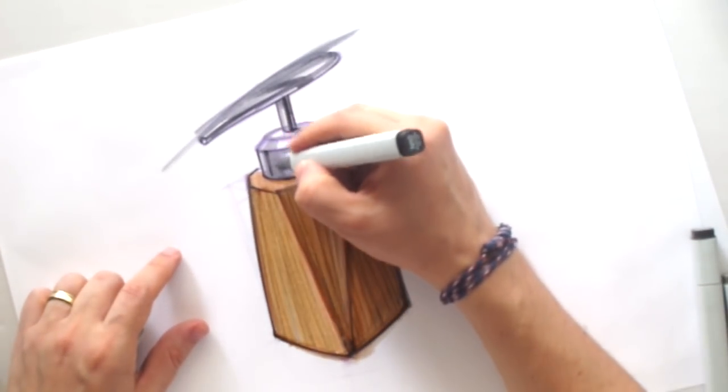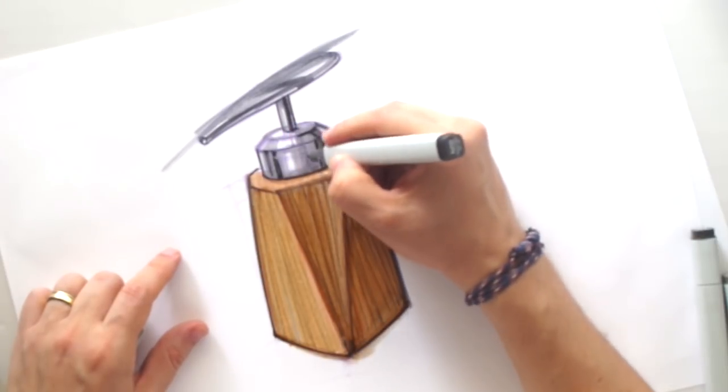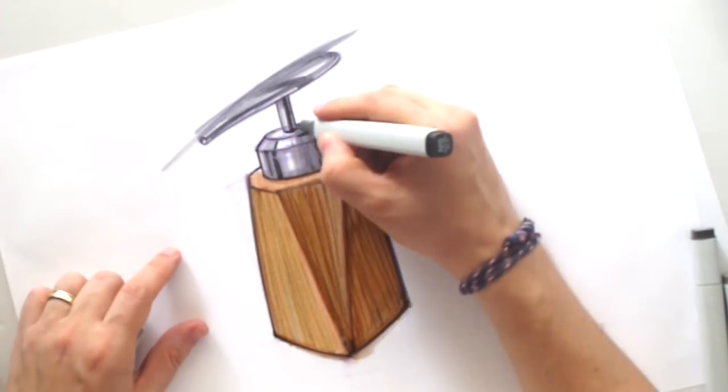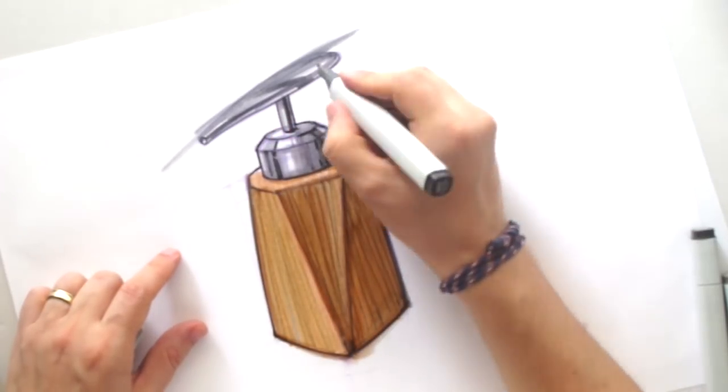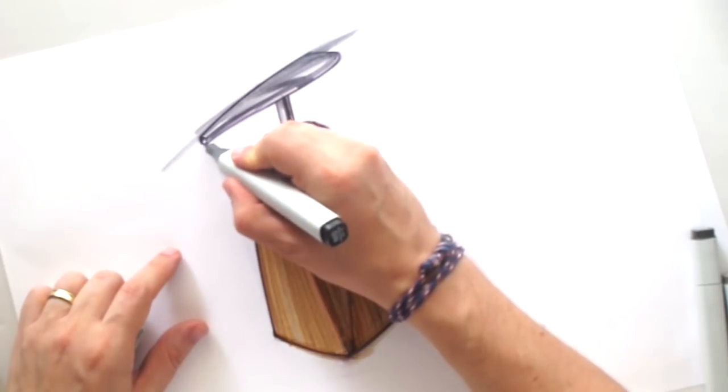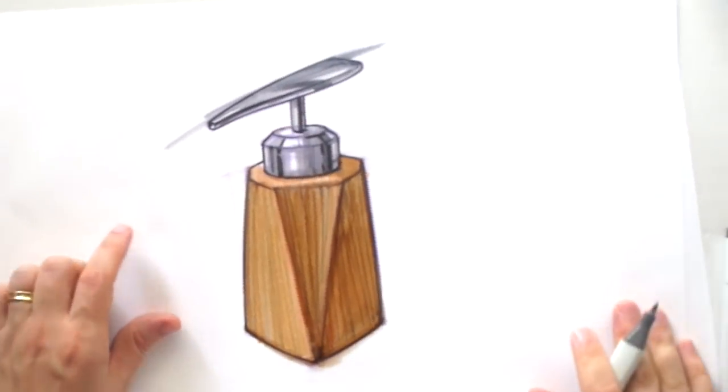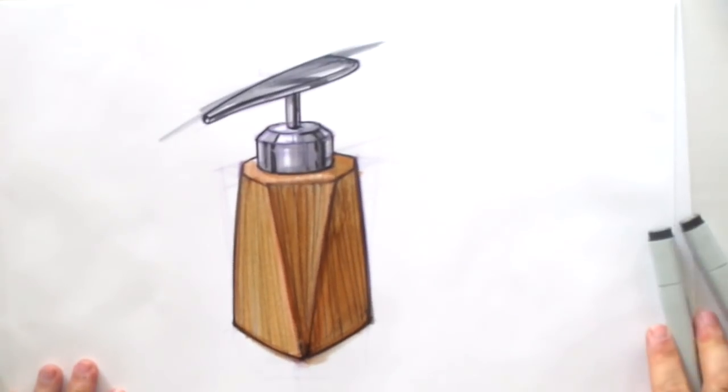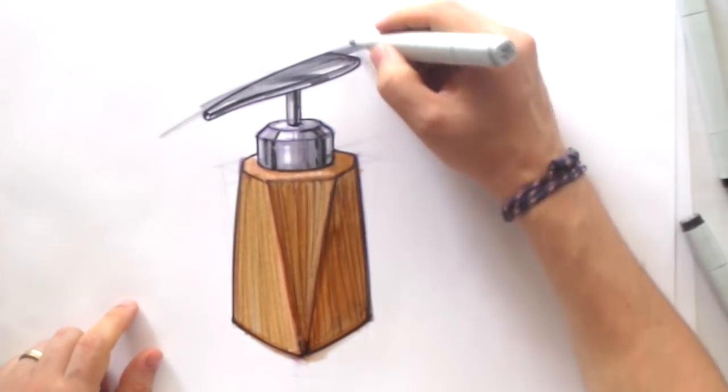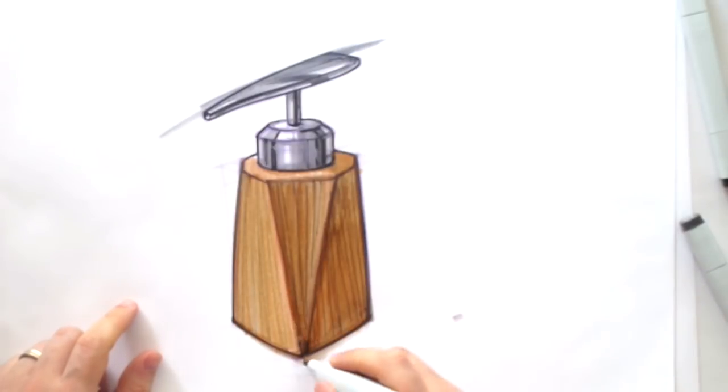By the way, for those renders, at this moment I'm using the Copic paper, A3 paper. It's quite good for blending, mixing the markers. But actually, I don't care about what kind of material, what kind of paper to use.